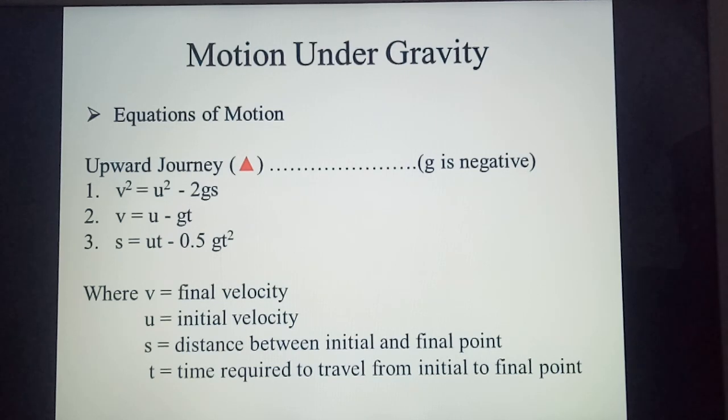So if the journey of a particle is upward, then we are going to take g as negative and the altered versions of the equations of motions that we are to use will be: v² = u² - 2gs, v = u - gt, and s = ut - 0.5gt².